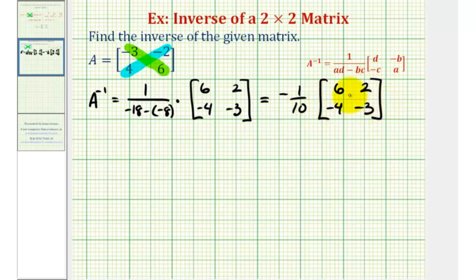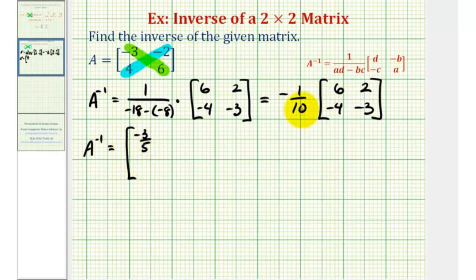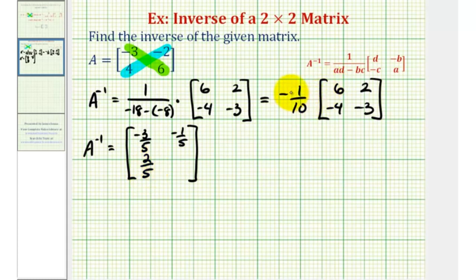Let's go ahead and perform the scalar multiplication. So we'll have negative one-tenth times six, that's negative six-tenths, or negative three-fifths. And we'll have negative one-tenth times two, that's negative two-tenths, or negative one-fifth. Negative one-tenth times negative four is positive four-tenths, or two-fifths. And then finally, negative one-tenth times negative three is positive three-tenths.